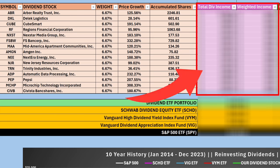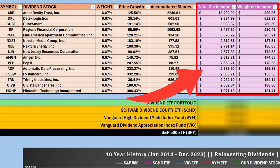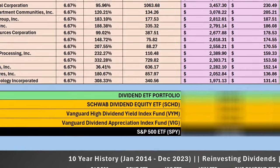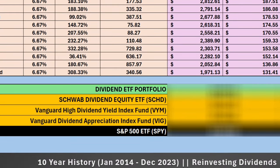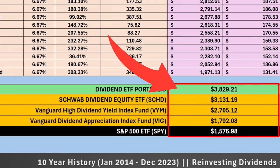Looking at columns G and H, this shows total dividend income if all money was in one stock versus the weighted income. Number one was Arbor Realty Trust, followed by Delek Logistics, CubeSmart, Regions Financial, and Mid-America Apartment Communities. Lowest income came from Trinity, Civista, and Microchip Technology. All together, the portfolio generated $3,829.21 in total dividend income over the entire 10-year period. Comparing to the alternatives: SCHD had $3,131, VYM had $2,705, VIG had $1,792, and the S&P 500 had $1,576. The custom portfolio beat SCHD and VYM by a pretty wide margin, which was a little surprising.